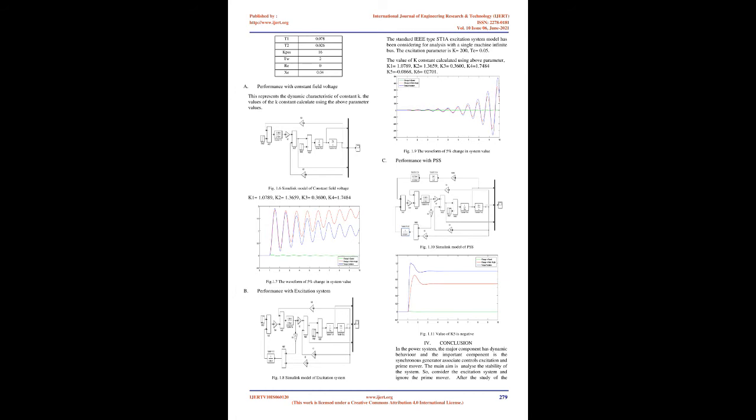3. K.R. Padiyar, 'Power System Dynamics Stability and Control,' 2nd Edition, BS Publications. 4. P. Kundur, 'Power System Stability and Control,' New York, McGraw Hill, 1994. 5. Guru Nath Gurula, Indra Nielsen, 'A Modified Heffron-Phillips Model for the Design of Power System Stabilizers,' IEEE 978-1-4244-1762, September 2008.